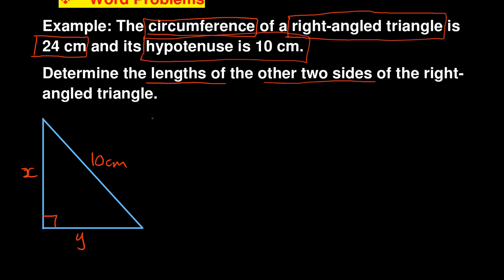Let's use the information we are given. They say the circumference — remember, circumference is the distance around the shape. So to find the circumference I must add 10 plus x plus y to get the distance right around. The triangle has three sides, so adding the first side (10 cm), the second side (x), and the third side (y) must give me 24. So: x plus y plus 10 equals 24.